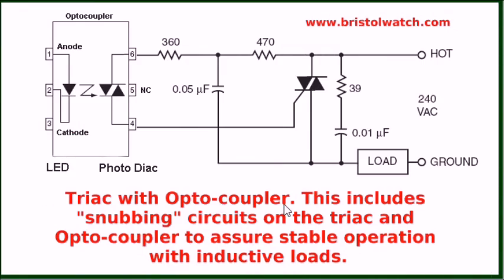Here is your TRIAC with an optocoupler, whichever one you're using. Note that the T2 terminal is where you get the voltage and current for your gate. Also note you need a snubber circuit if this is a magnetic load — being motors, relays, or transformers — because of voltage spikes and inductive feedback. This will protect the gate from false firing.